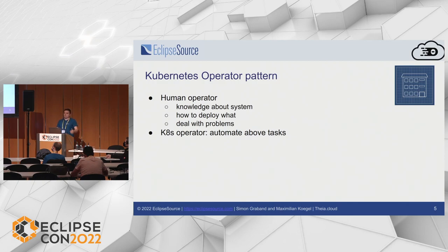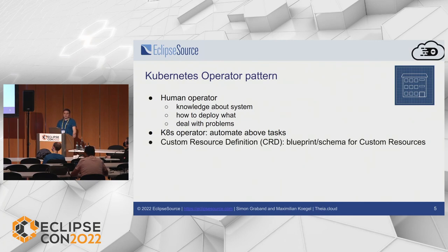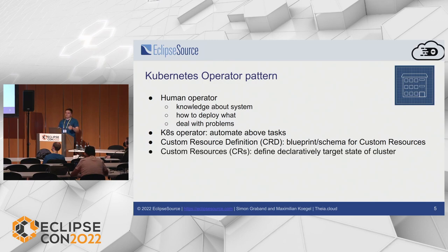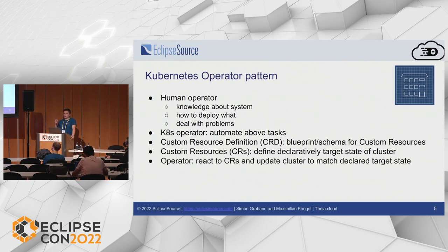This is where the Kubernetes operator pattern comes into place — its goal is to automate those tasks. It does so by introducing three core concepts. First, a custom resource definition, which is basically a blueprint or schema for a custom resource. Second, a custom resource, which is a file that declaratively defines the target state of a cluster — it tells the operator how the cluster should look in the end. Third, the operator itself, whose role is to react to those custom resources and update the cluster's real state to match what is described.